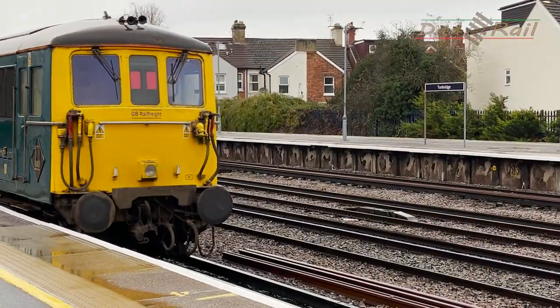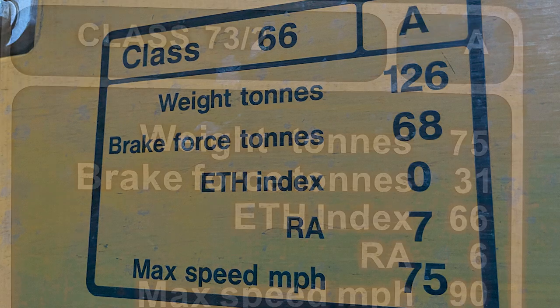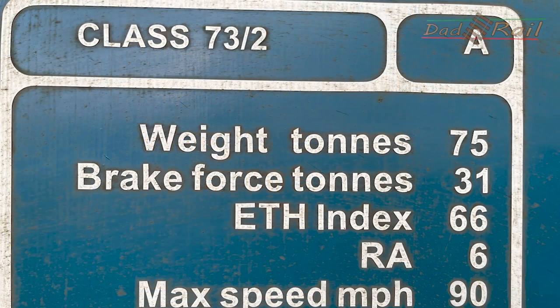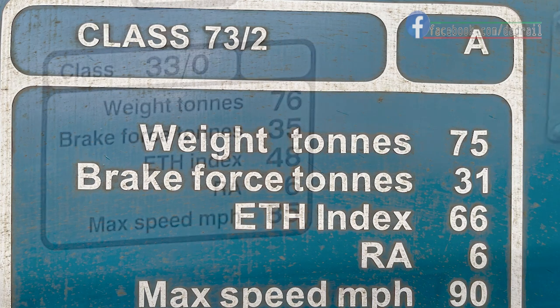we have the locomotive class — in this case a 66 — followed by an A indicating this is the A end of the locomotive. Sometimes, as seen here in this class 73 picture, you will also have the class designation, this one being a class 73-2.